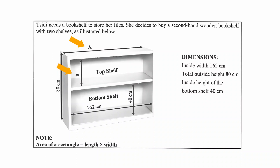Whenever you're given letters for dimensions in questions like this, you will be asked to calculate the values of those letters. In other words, we will be asked to calculate the values of A and B. We are also given a note that states that the area of a rectangle equals the length times the width.